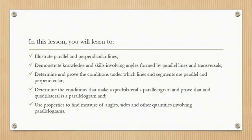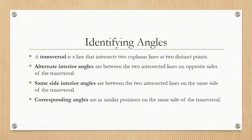E. Use properties to find measures of angles, sides, and other quantities involving parallelograms. Identifying angles: A transversal is a line that intersects two coplanar lines at two distinct points.